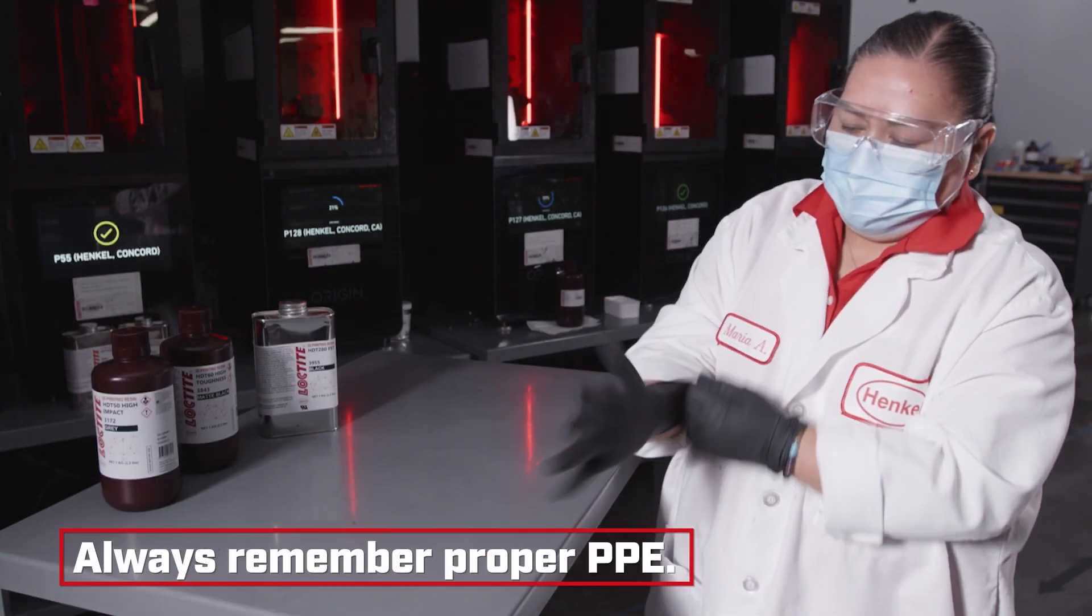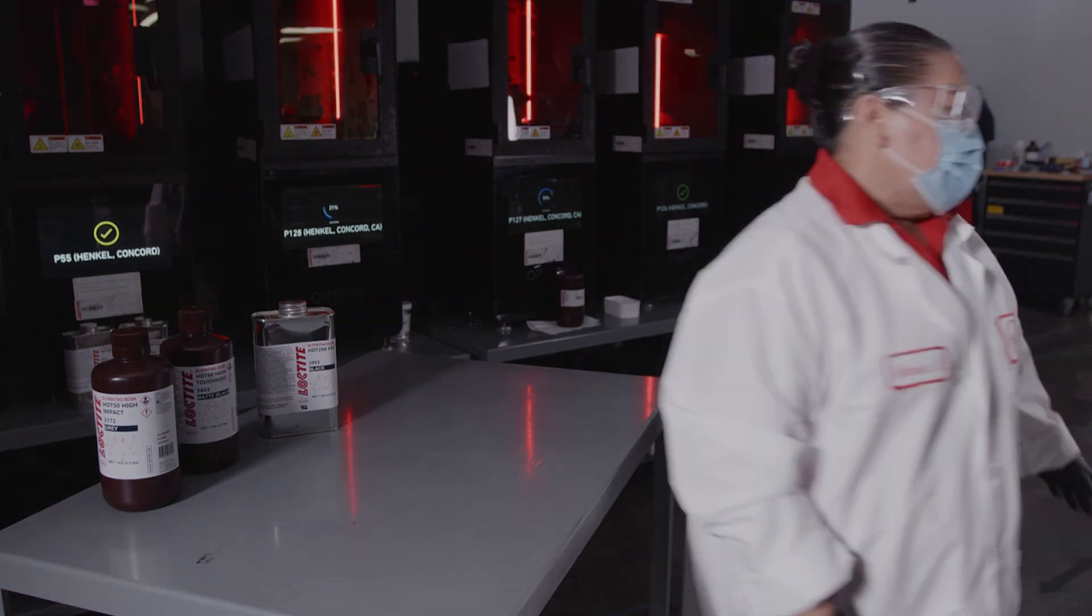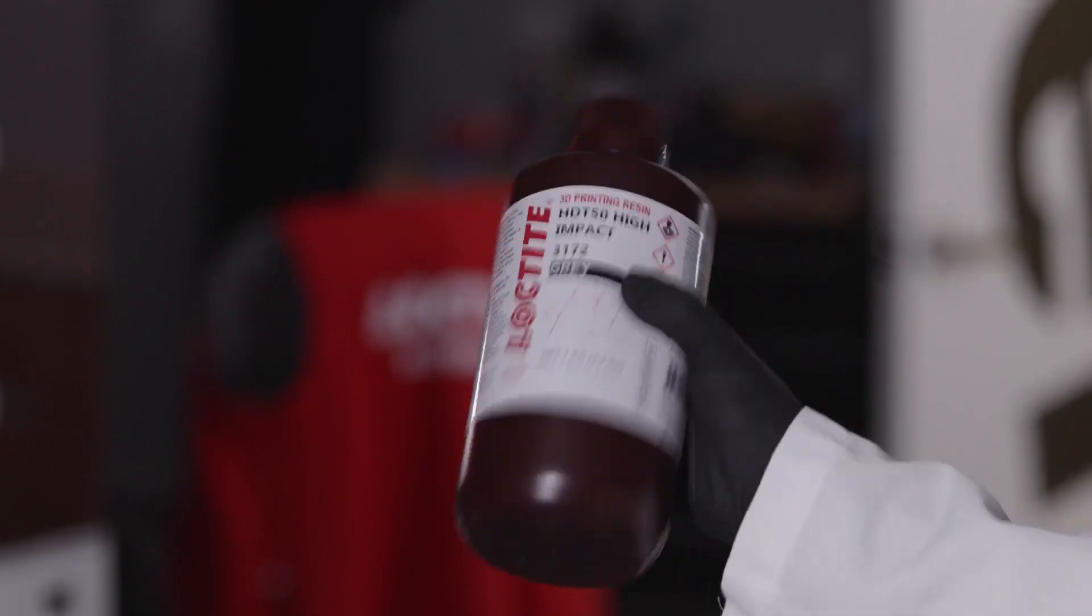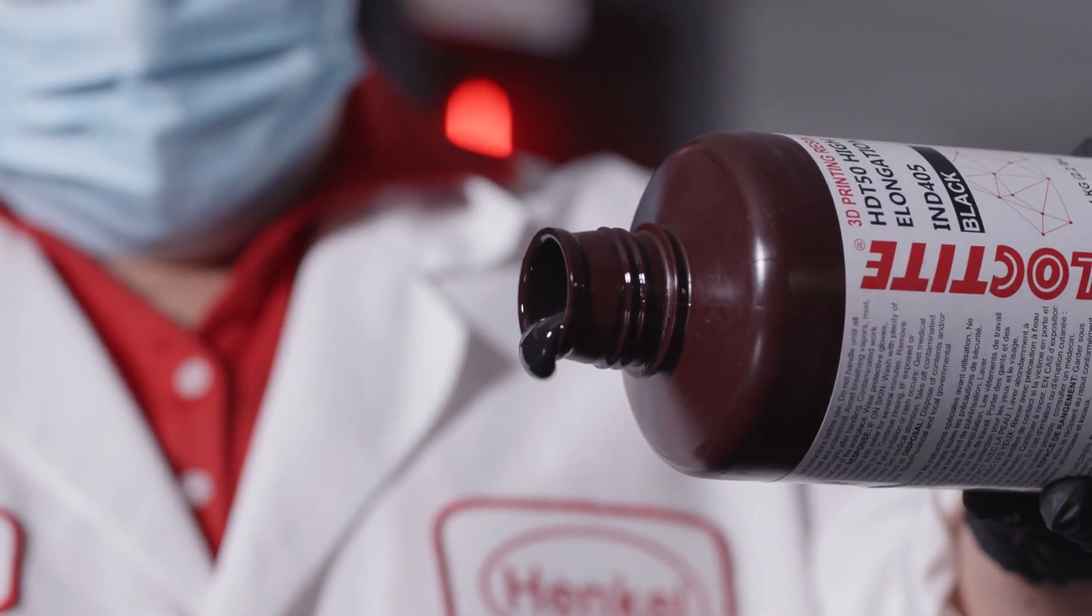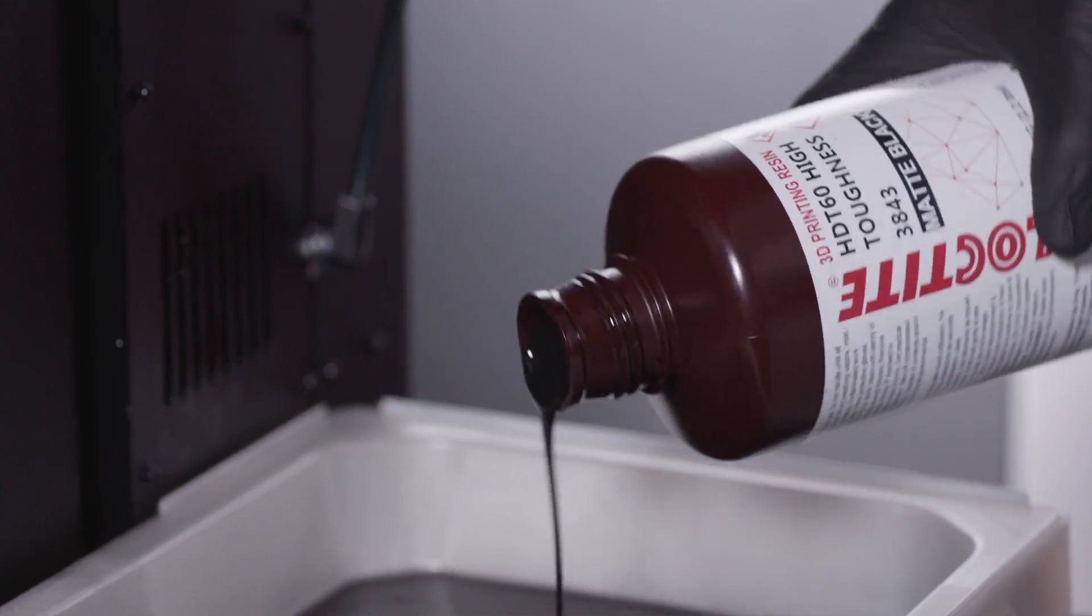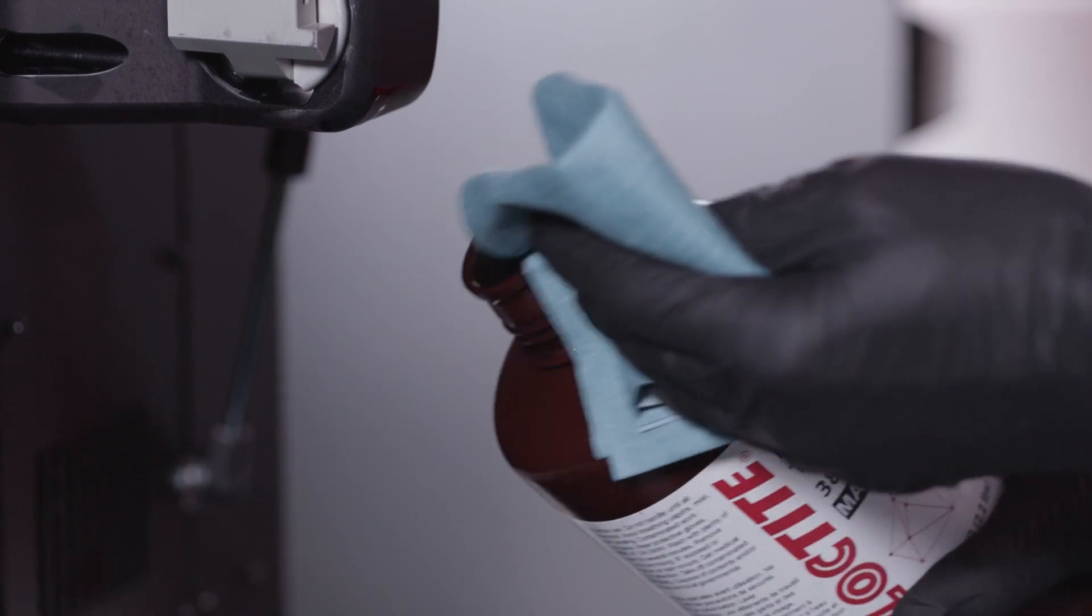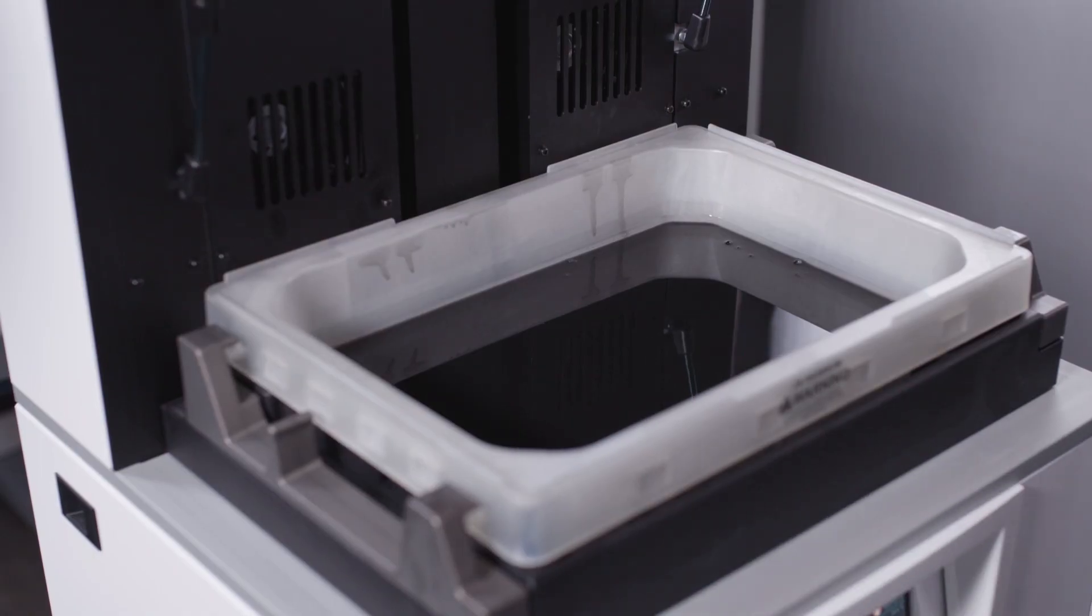It is recommended to wear proper safety equipment before handling any material. Prepare the resin and begin to pour it into the build tray. With the resin loaded in the tray, you can now start your print.